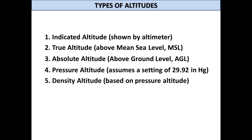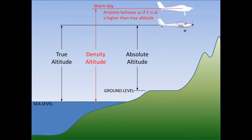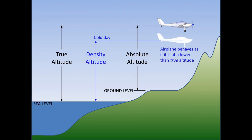Density altitude is obtained by correcting the pressure altitude for deviations from standard temperature. On a standard day, pressure altitude and density altitude are one and the same. On a warm day, the density altitude is higher than the pressure altitude. Conversely, on a cold day, the density altitude is lower than the pressure altitude.